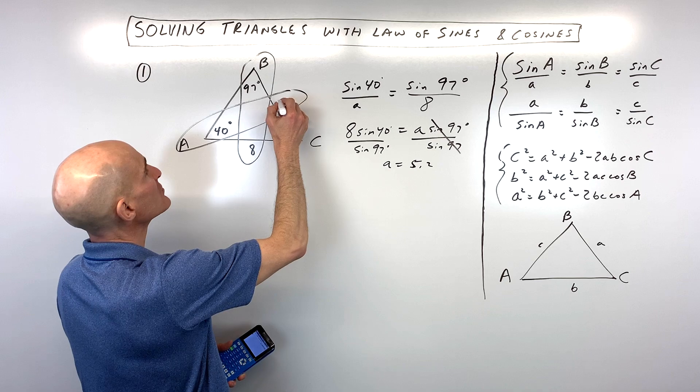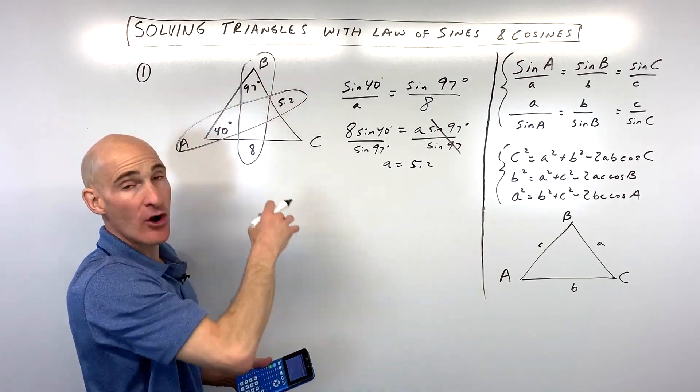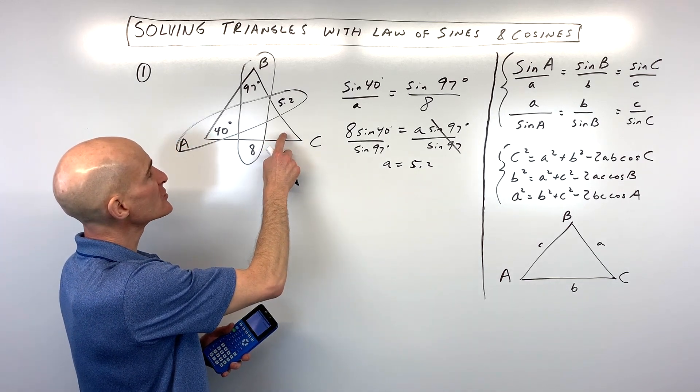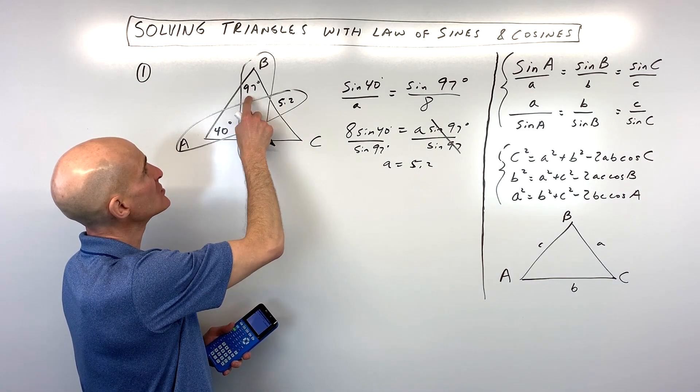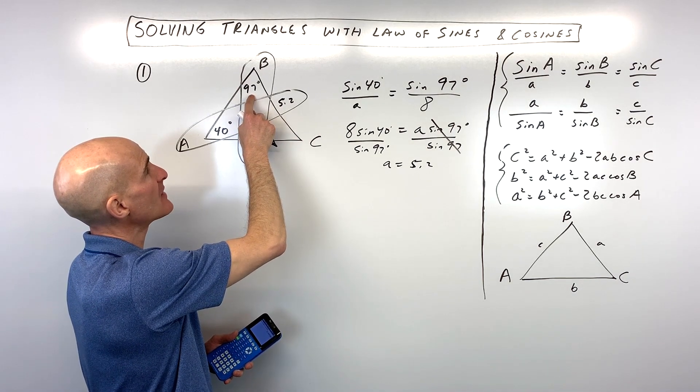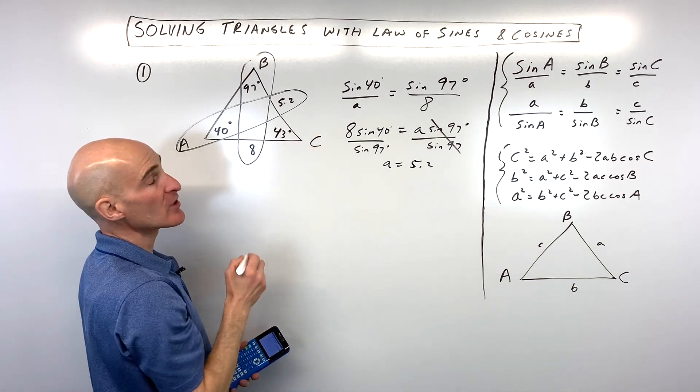Now, when we talk about solving triangles, what that means is we want to find all the angles and all the sides. So, there's actually six pieces of information here. Let's solve for this angle C here next. We have these two angles. We can add them up and subtract from 180 to find the third. So, 40 plus 97 is 137. And if we subtract that from 180, we get 43 degrees.